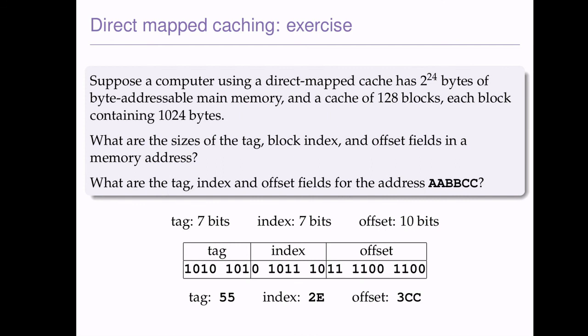That's how you figure out the tag, index, and offset. It's relatively easy once you get the hang of it, but it's very handy to remember your powers of 2 to tackle this. I hope you found this useful — that's everything I was planning to go over in this video, and if you have any questions please do let me know. Thanks.